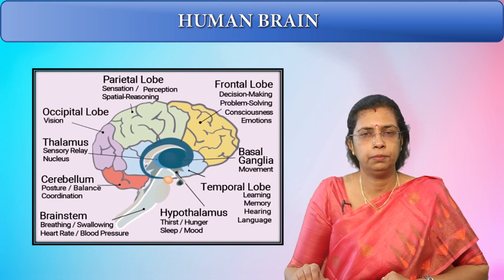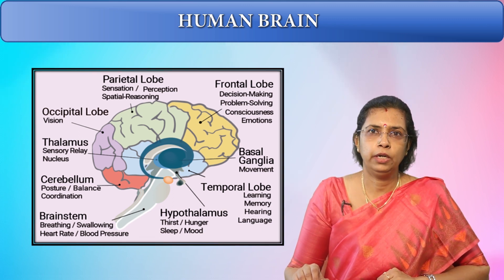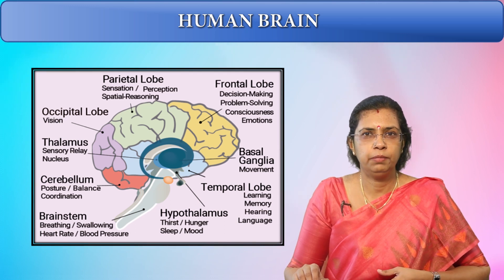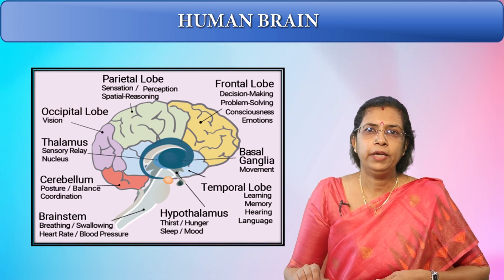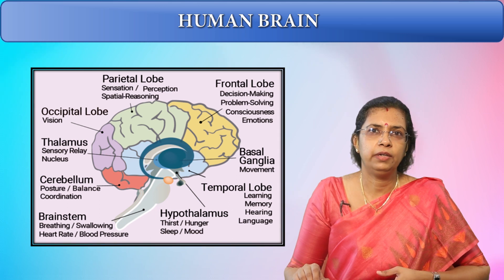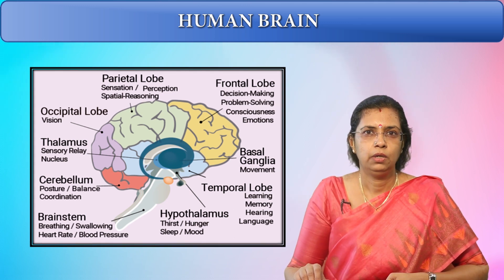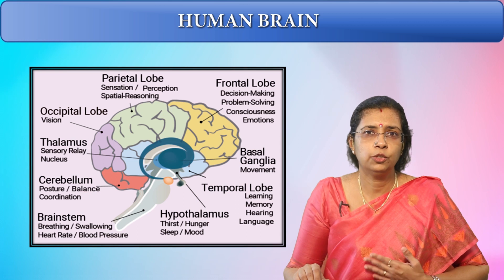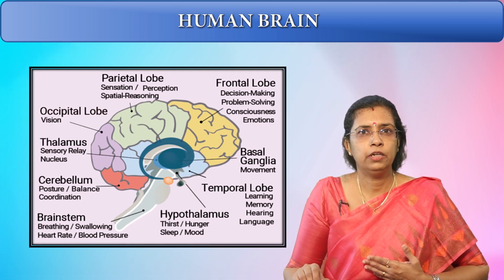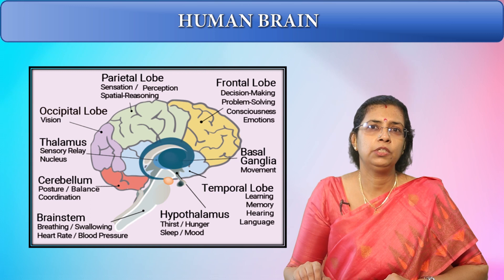Here is the structure of the human brain. The frontal lobe is involved in decision making, problem solving, consciousness, and emotional behaviour. The basal ganglia is important in movement. The temporal lobe is important in learning, memory, hearing, and interpreting language. The hypothalamus is very important in controlling thirst, hunger, sleep, mood, and fever — it is critical in maintaining balance in the human body.